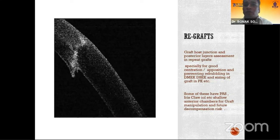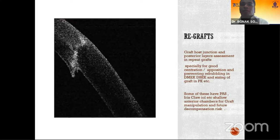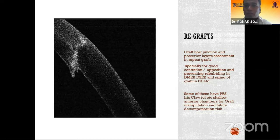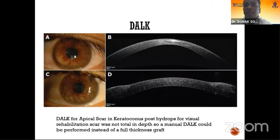In a case with a spur on the posterior ledge — a 6.5 to 7 mm optical keratoplasty done in an eccentric position — at the posterior ledge we decided not to do endothelial keratoplasty in the form of DMEK or DSAEK, and a penetrating keratoplasty was done for better visual outcome. In a case of apical scar in keratoconus, the apical scar was not involved in the deeper layer, and therefore a manual DALK could be performed instead of a full-thickness graft based on depth assessment.